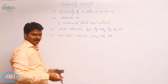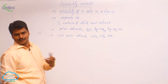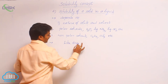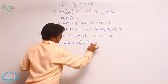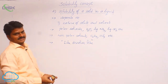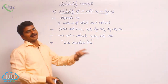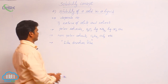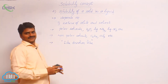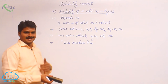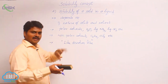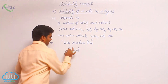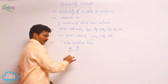A polar solvent can dissolve more of a polar or ionic compound. Remember: like dissolves like. Polar compounds dissolve in polar solvents, and non-polar compounds dissolve in non-polar solvents. Compounds like NaCl, HCl, and sodium nitrate dissolve in polar solvents. In HCl, there are δ⁺ and δ⁻ charges — it is a dipole — a molecule containing two opposite charges. Water is also a dipole.